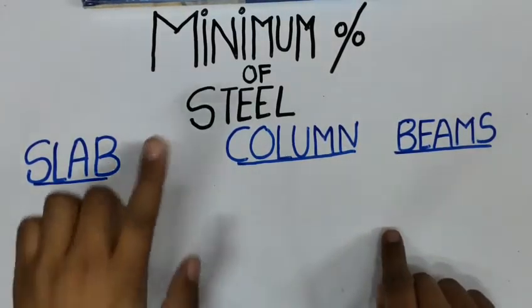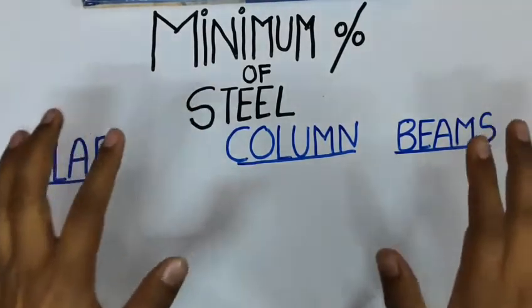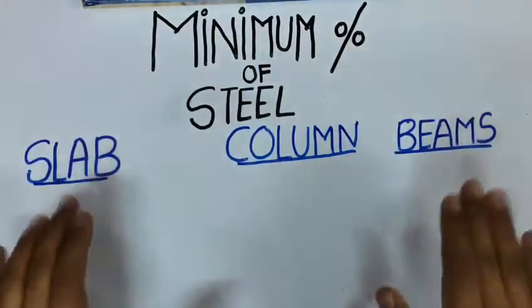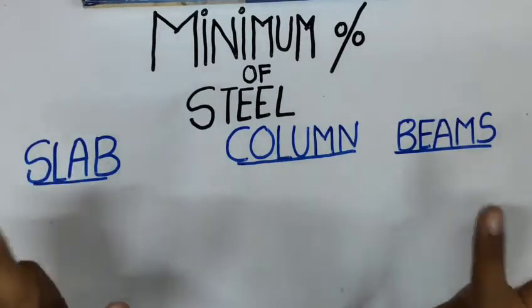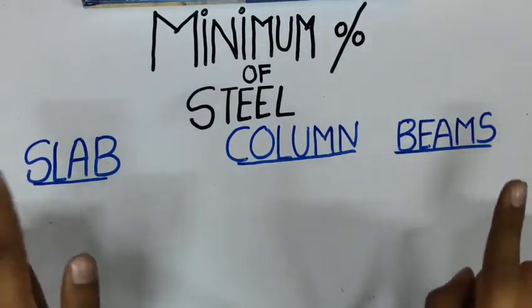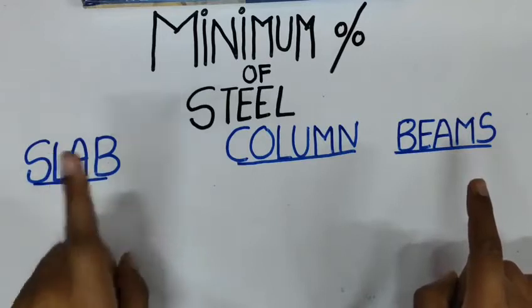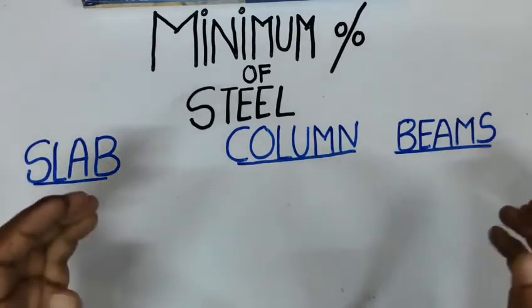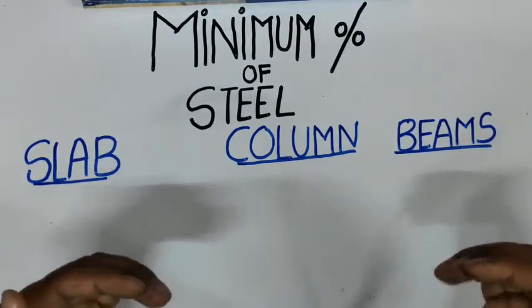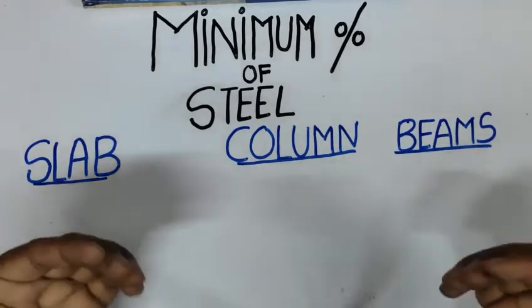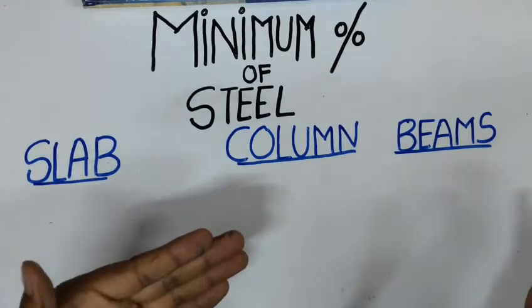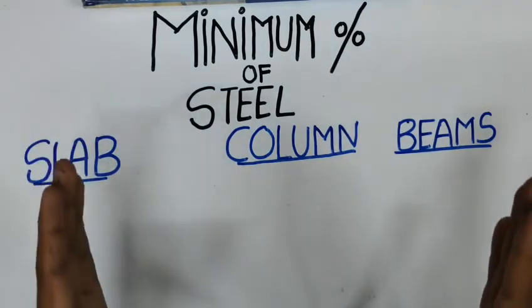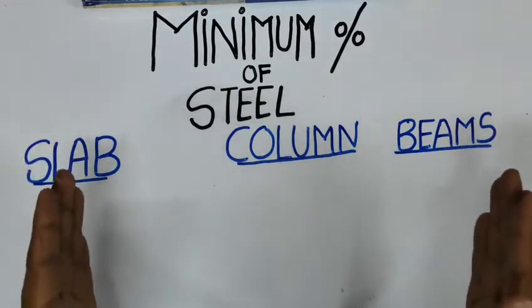They have to see the minimum percentage of steel for the slab, for the column, and for the beam. They are the three most important parts of any RCC structure: slab, followed by column, followed by beams. So what is the percentage of steel required for these three different elements of RCC.